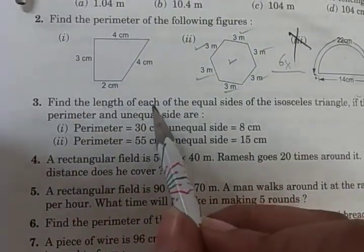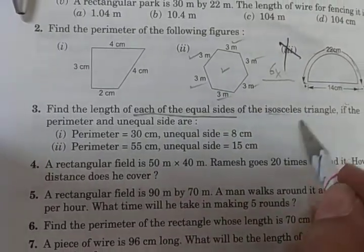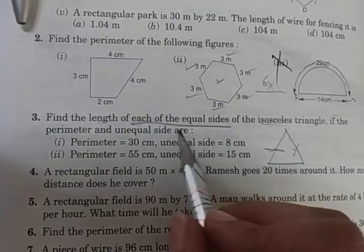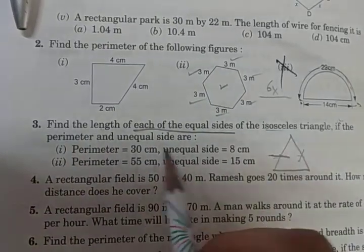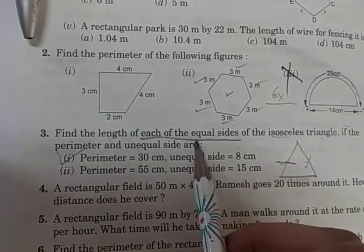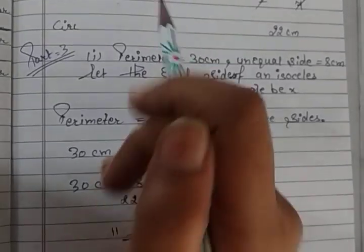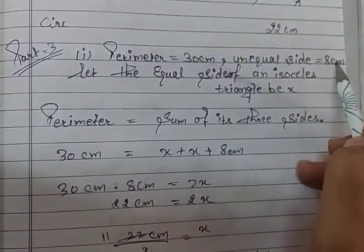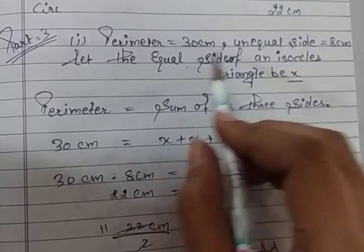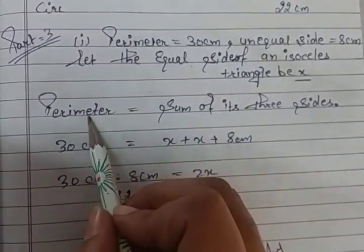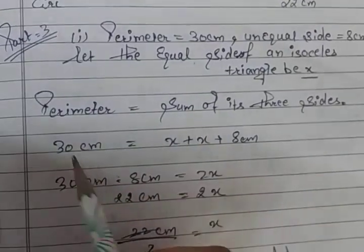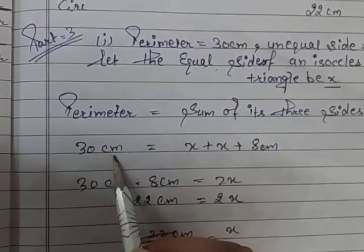Next question: find the length of each of the equal sides of the isosceles triangle. You know that in the isosceles triangle we are having 2 equal sides and 1 unequal side. You have to find how much the equal sides measure. The perimeter is given and the unequal side is also given, so we have to find the equal sides of this triangle. The perimeter is 30 cm and the unequal side is 8 cm.